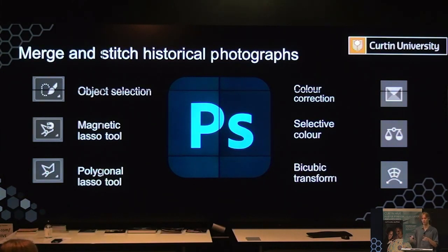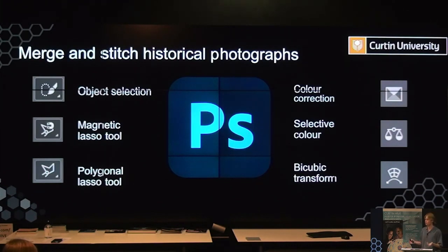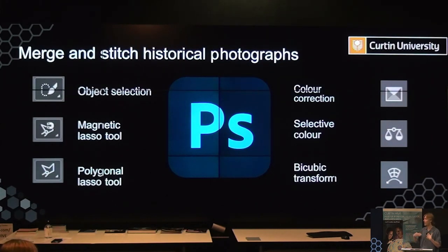These selection tools help combine images by converting selections into layer masks, which act like a non-destructive eraser while preserving the original information. Because prints often differ in color, color correction and selective color tools are used to identify color differences and create seamless transitions between two prints. The bicubic transformation tool and other distort tools are also used to manipulate the scale of objects, since images may have been taken from slightly different positions.